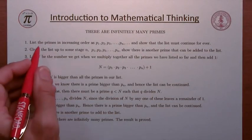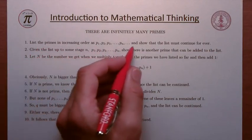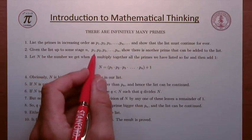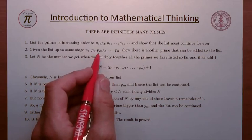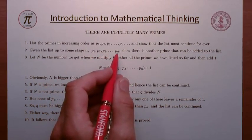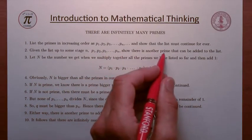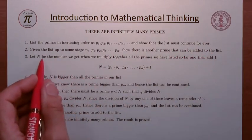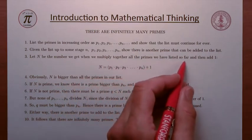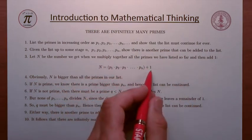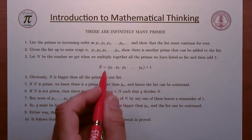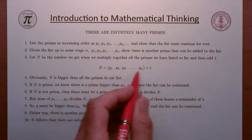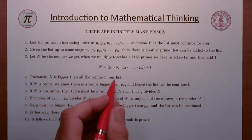The idea is to show that if we list the primes in increasing order, then the list can be continued forever. So we imagine that we've listed the primes: P1 is 2, P2 is 3, P3 is 5, etc., all the way to some stage Pn. And we show that we can always add another prime to the list. To do that, we look at the number N, which we obtained by multiplying together all the primes in the list so far and then adding 1. This number N is certainly bigger than all of those primes P1 through Pn.